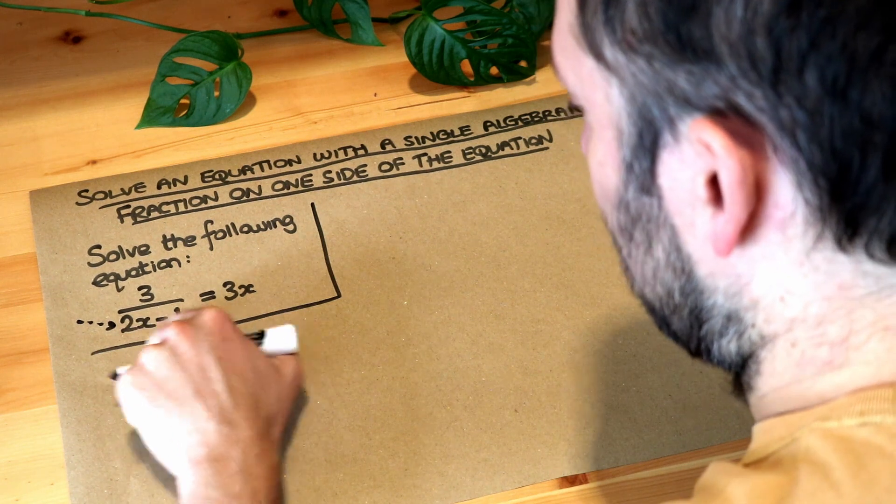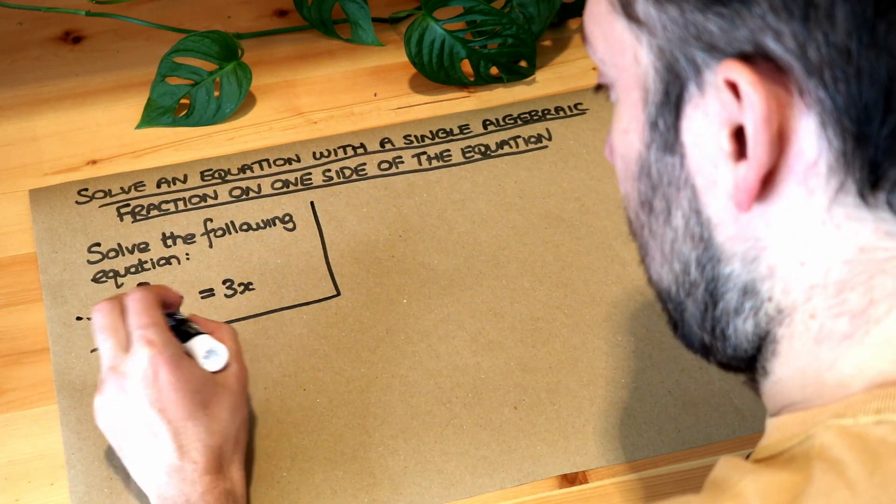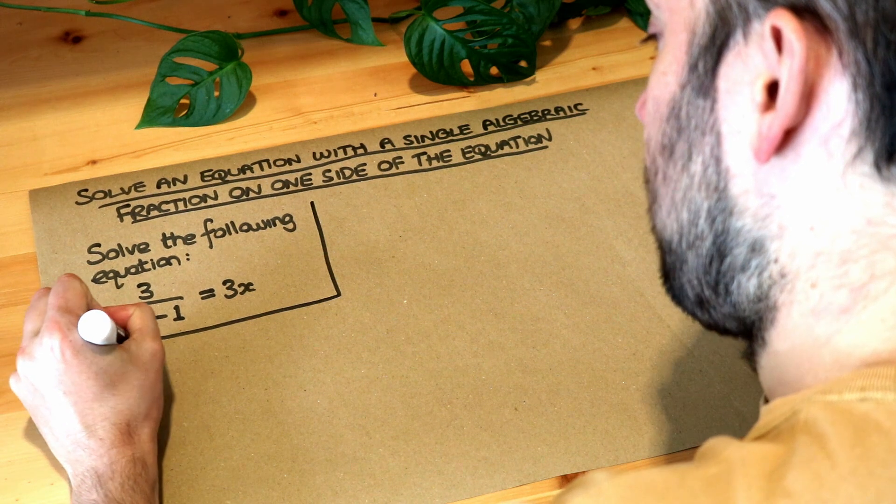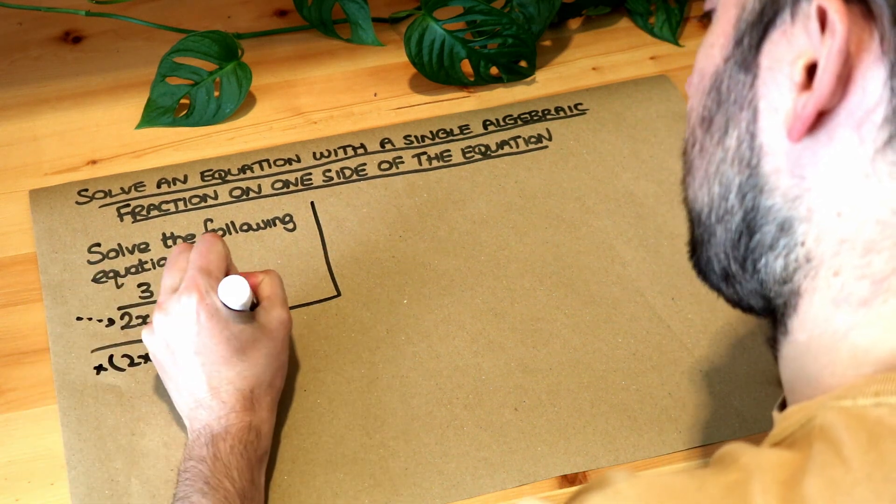So we've got 2x minus 1 as the denominator, and that means we should multiply both sides of the equation by that denominator, 2x minus 1.